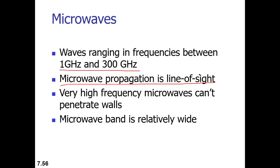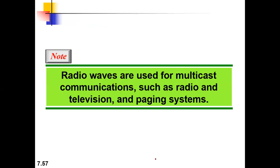Radio waves since they're of lower frequencies can penetrate walls. But since microwaves are high frequency waves they cannot penetrate walls and the band is relatively wide for a microwave. Normally radio waves are used for multicast communication.